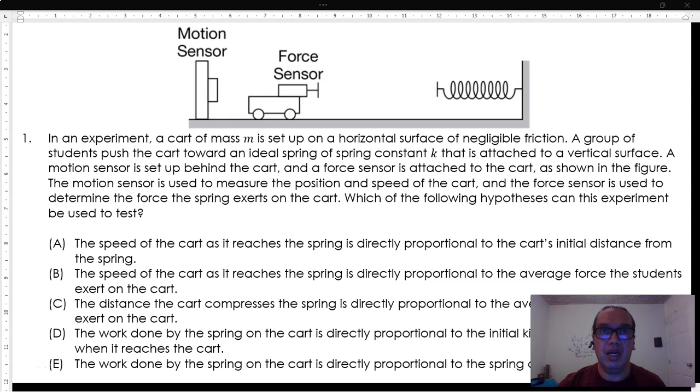In an experiment, a cart of mass m is set up on a horizontal surface of negligible friction. Students push the cart toward an ideal spring of spring constant k that is attached to a vertical surface.